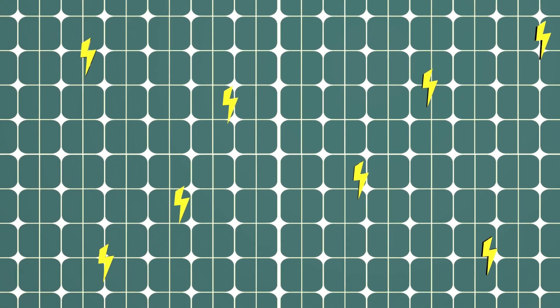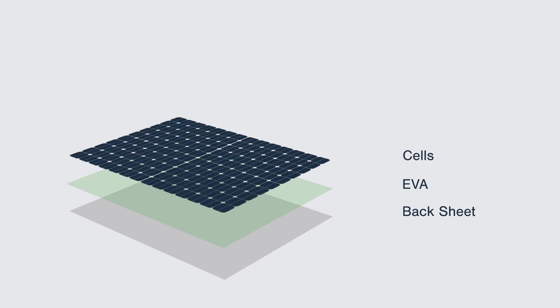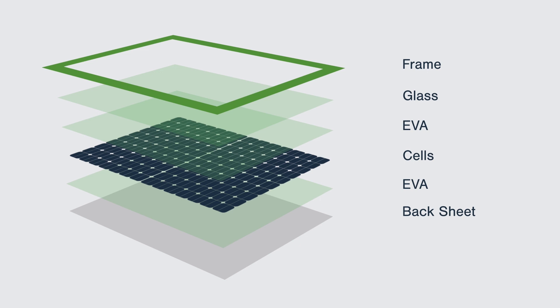PV modules use glass, aluminum, frame, EVA, and other auxiliary materials as the main packaging to provide protection for the cells.